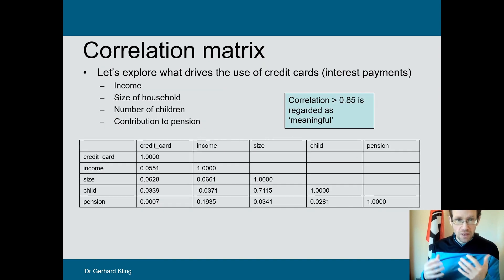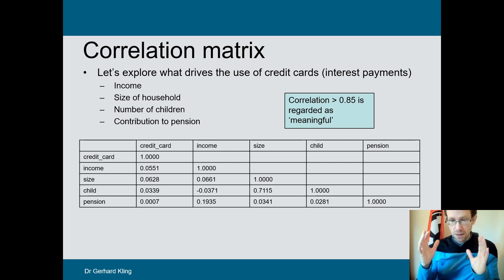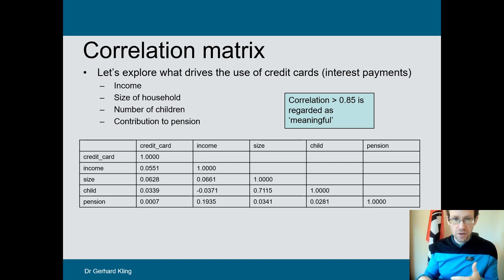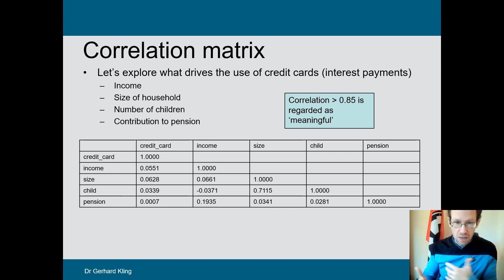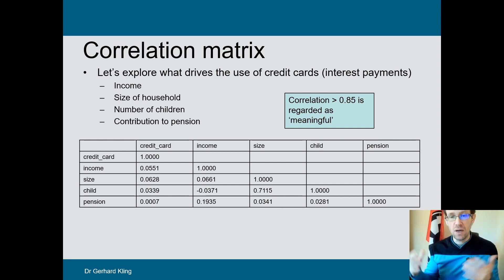Apart from the scatter plot — and I'll show you an example in a minute — looking at a correlation matrix is insightful because you can look through your whole dataset and see what possible relationships might require some further analysis.